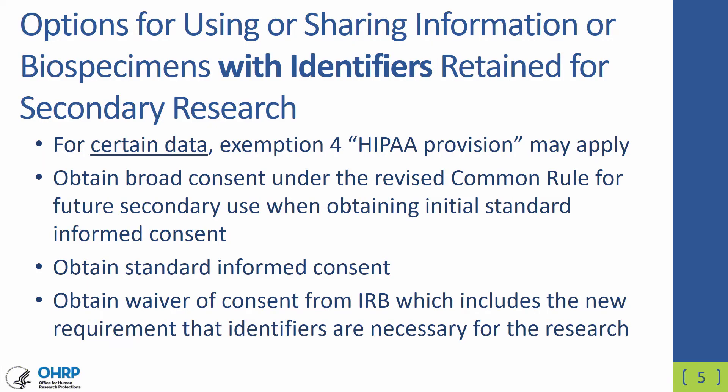Another opportunity is that researchers who never really thought about using the materials with identifiers, but at some point in the future when they are actually planning their secondary research, they realize they would like to use this material with identifiers. At that point in time, they could choose to go back and ask subjects through the standard informed consent process for consent to use this material. The fourth option, commonly used in the research community, is for researchers to go to their IRB to obtain a waiver of informed consent so that the materials can be used, provided all the conditions for waiver or alteration of informed consent are satisfied.